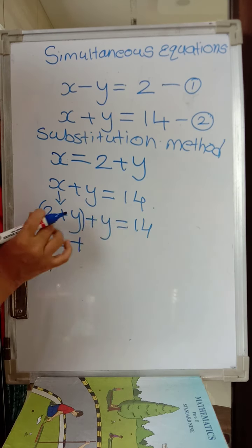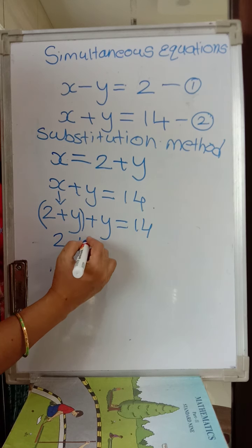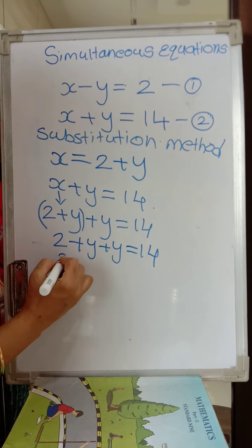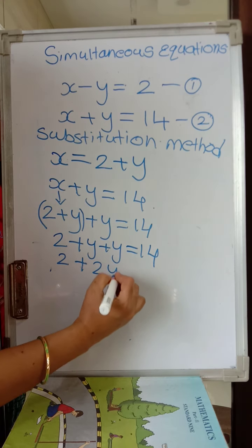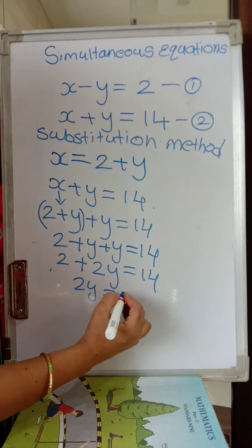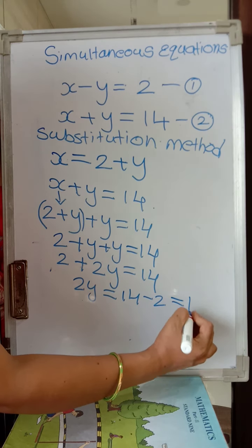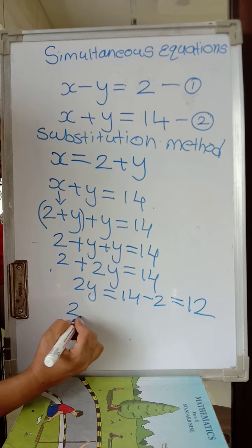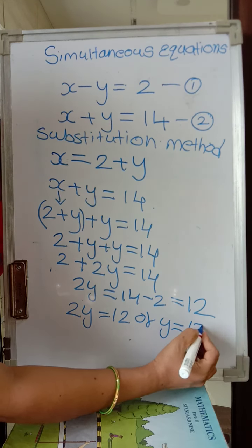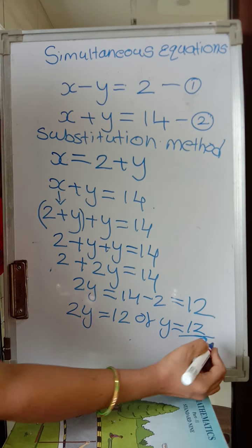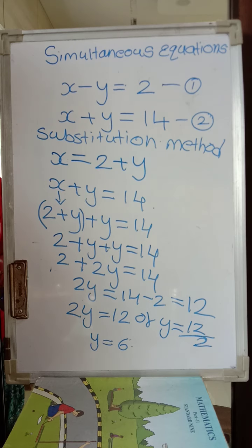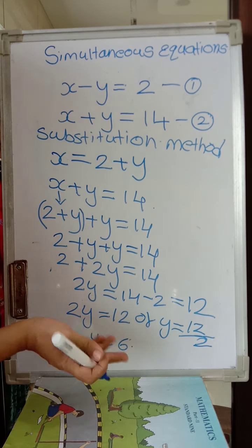Opening the bracket — there is only a plus sign, so we have 2 plus y plus y equals 14, which gives 2 plus 2y equals 14. Taking 2 to the other side: 2y equals 14 minus 2, which equals 12. So y equals 12 divided by 2, giving y equals 6.